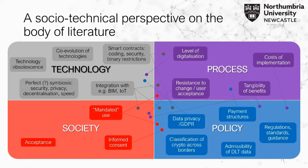From the literature, and from this socio-technical perspective, there are several aspects to consider. From a technology standpoint, technology obsolescence is quite an issue — particularly when looking at buildings built to last 50 to 100 years or more, where you have technology with a lifetime of maybe five or ten years. There's also co-evolution of technologies, because blockchain and smart contracts aren't really standalone — they rely on integration with things like Building Information Modelling and the Internet of Things. There are also issues around smart contracts: do we have the skills to code them, and are they secure, given current restrictions around binary code.